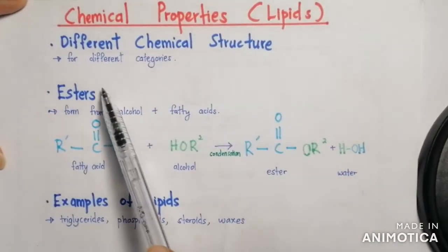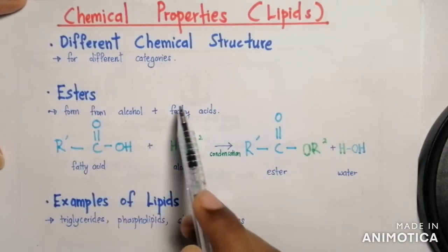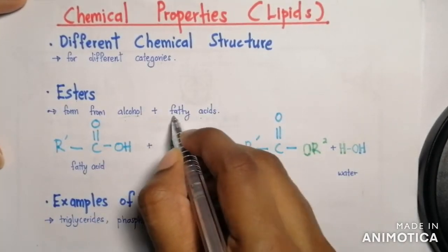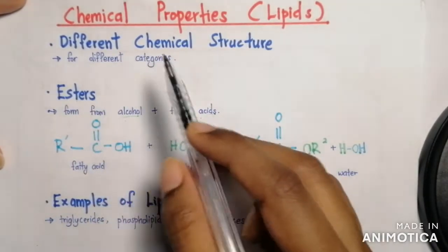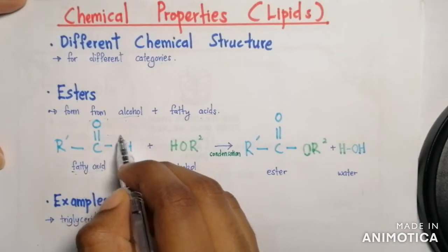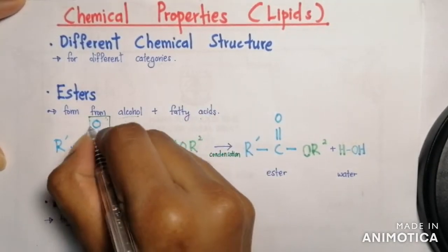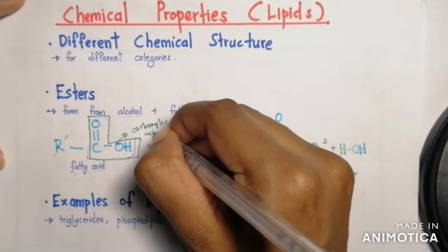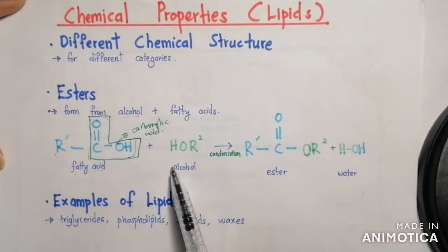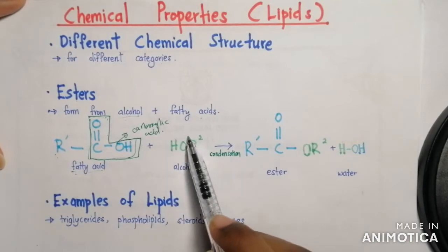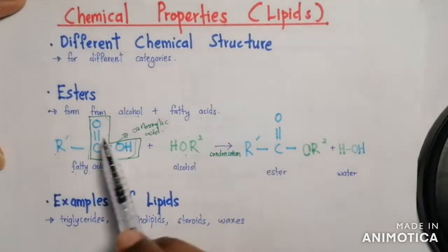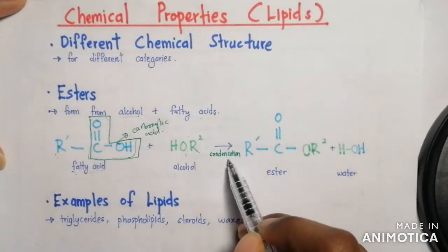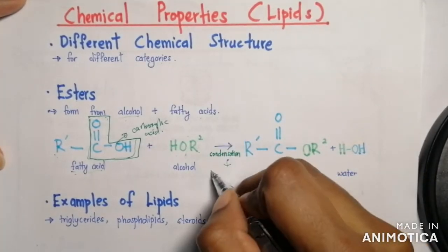Basically, lipids are esters because they are formed from alcohol and fatty acids. So if an alcohol is combined with a fatty acid, you can form an ester. Fatty acids consist of a carboxylic acid group and a hydrocarbon chain. The alcohol has a hydroxyl group and also a hydrocarbon group. The fatty acid and alcohol will undergo a condensation reaction, which means removal of water.